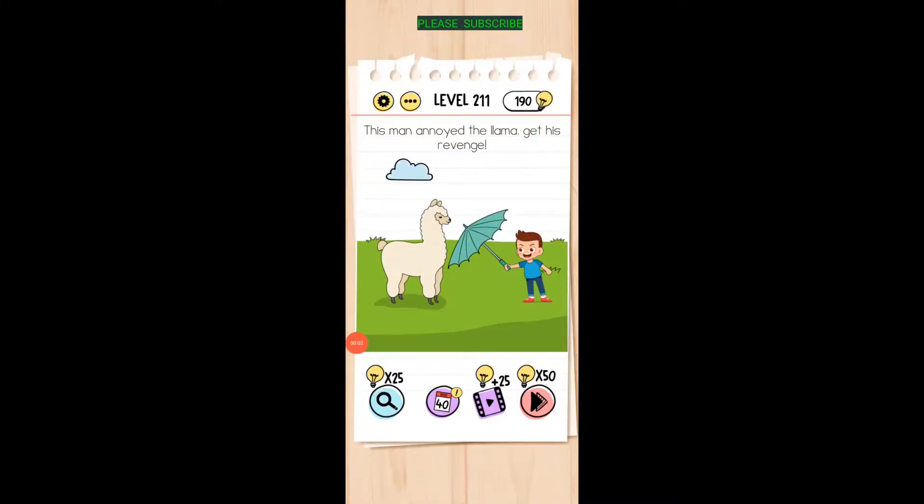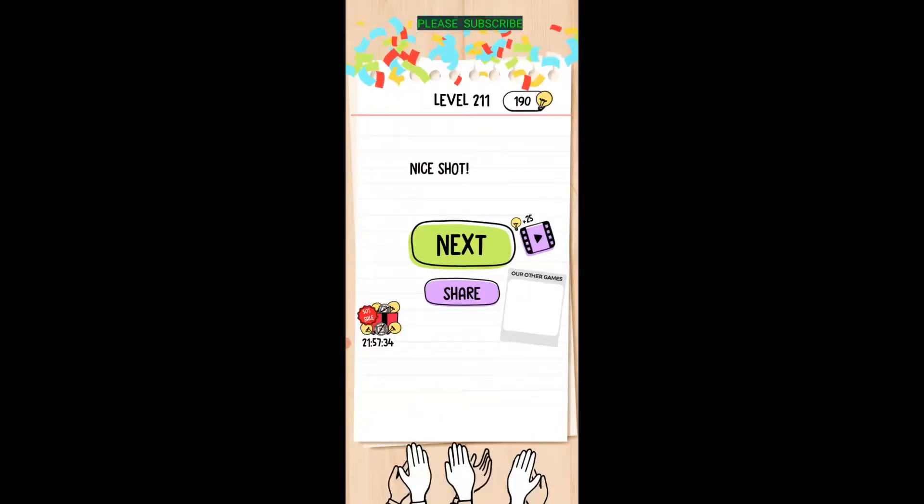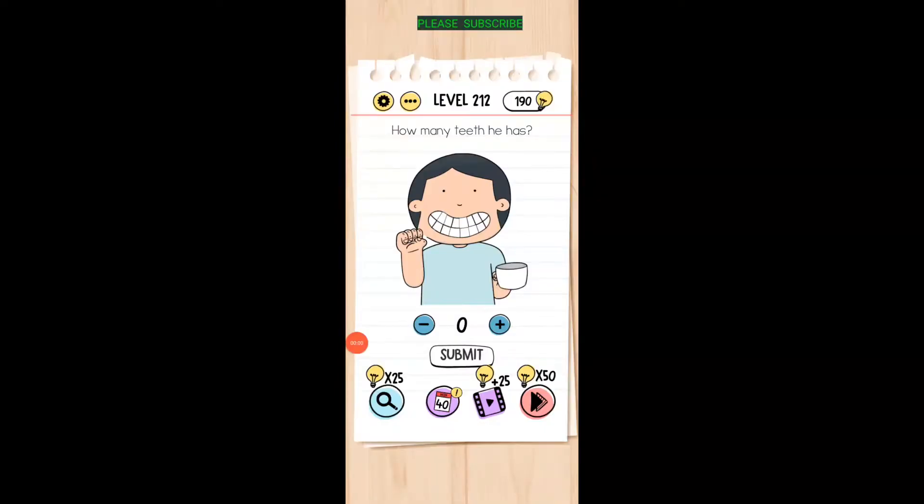This man annoyed the llama, get his revenge. The llama can't spit on it because he's got his umbrella, but if we move the cloud over the top of him and tap on the cloud to rain, and then you click on the llama, we've got him.